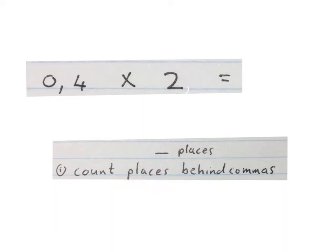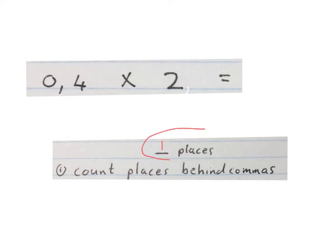The first multiplication sum we're going to do is 0,4 times 2. The first rule says count the places behind the commas. There's nothing behind the comma in 2, and there's one place behind the comma in 0,4. We then write it down — we write one place and we circle it. We know that there's one place, but we're always going to look out for places.